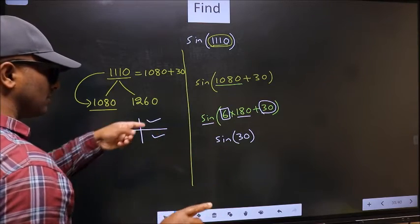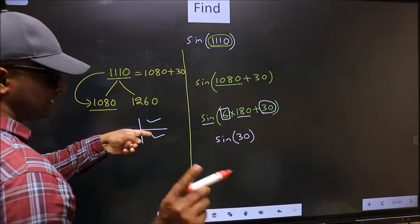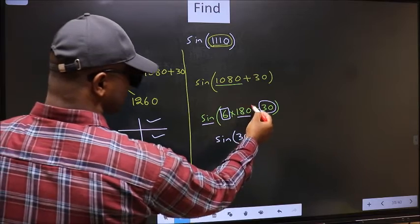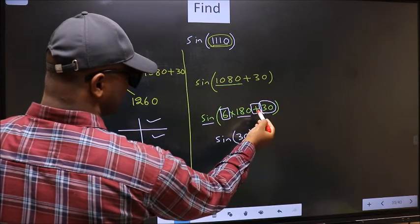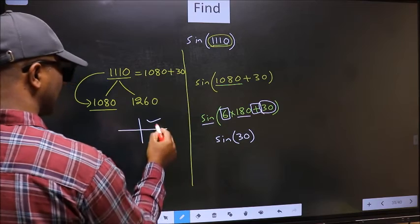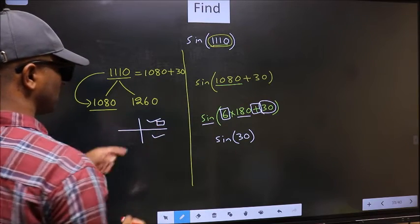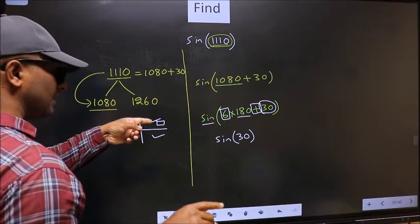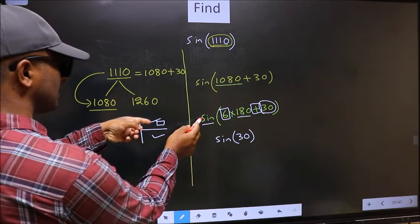So now to select the quadrant, we should look at this symbol. Here we have plus. That means angle lies in the first quadrant. And in the first quadrant, sine is positive.